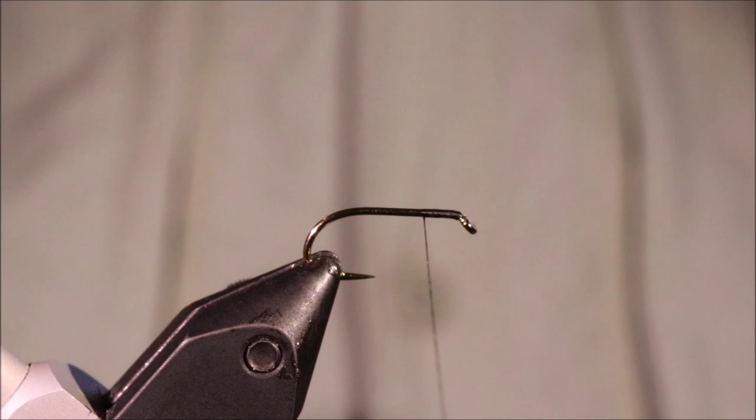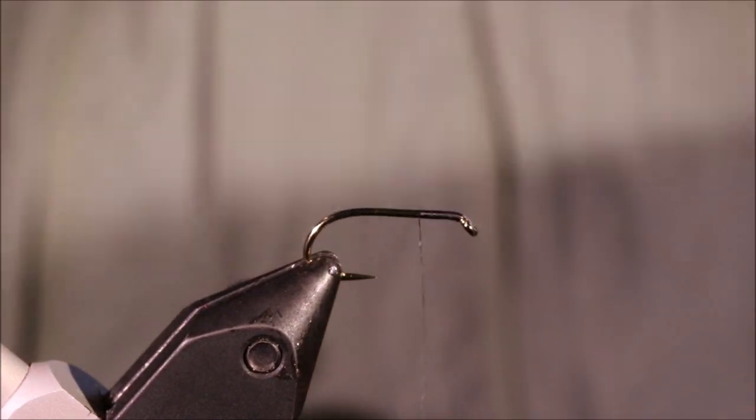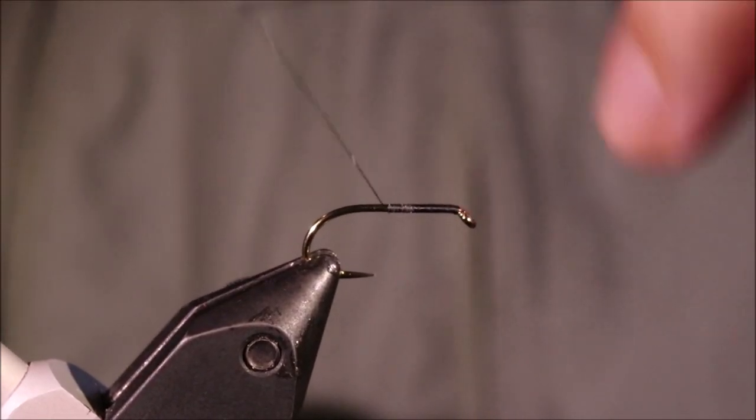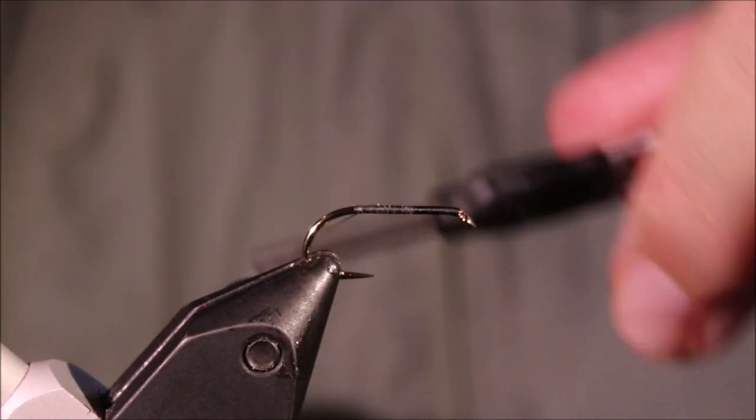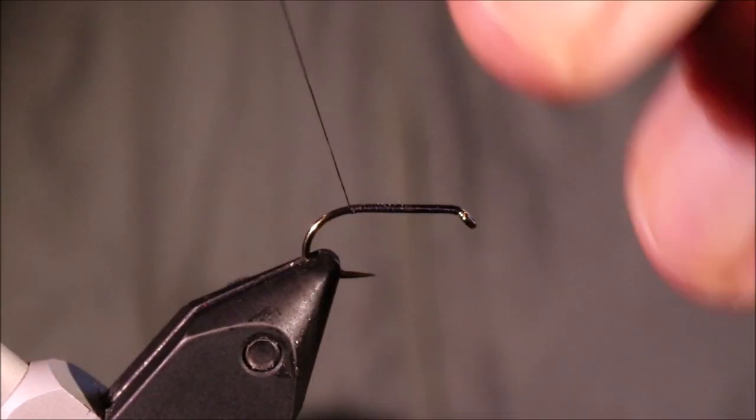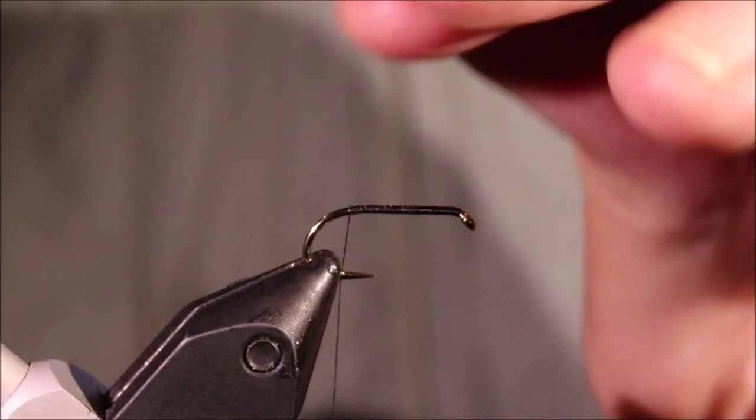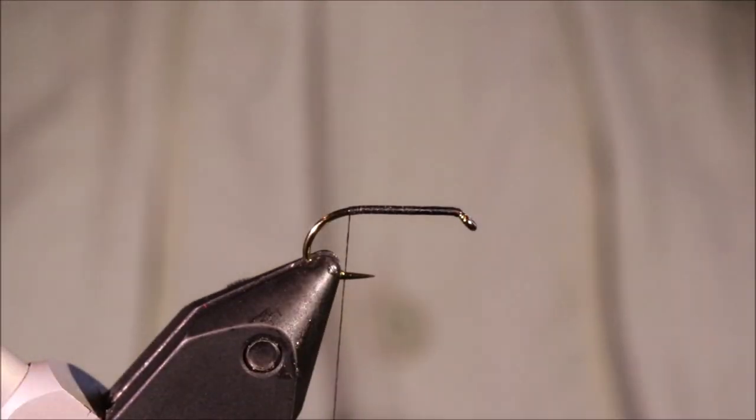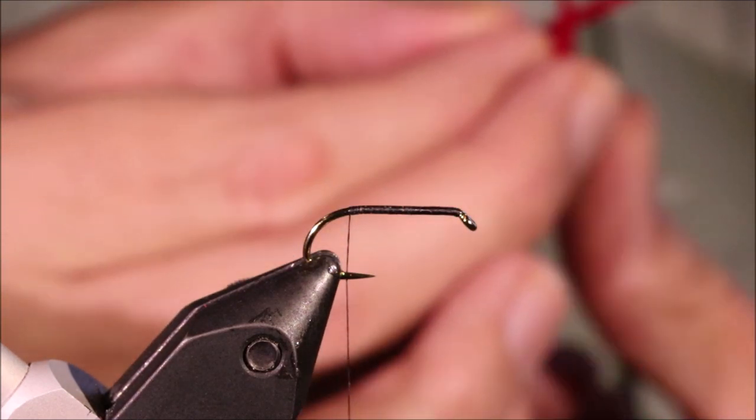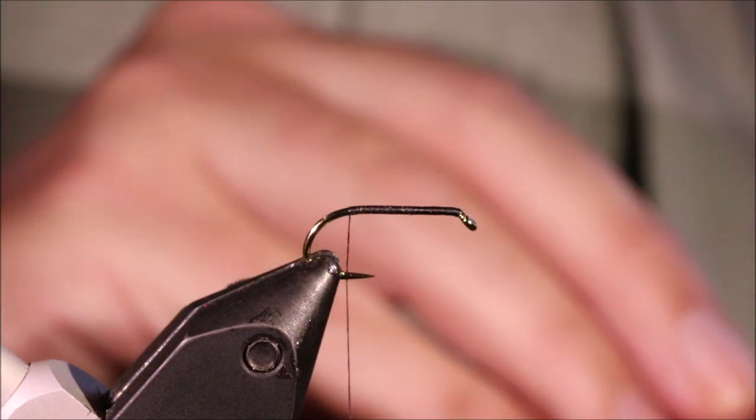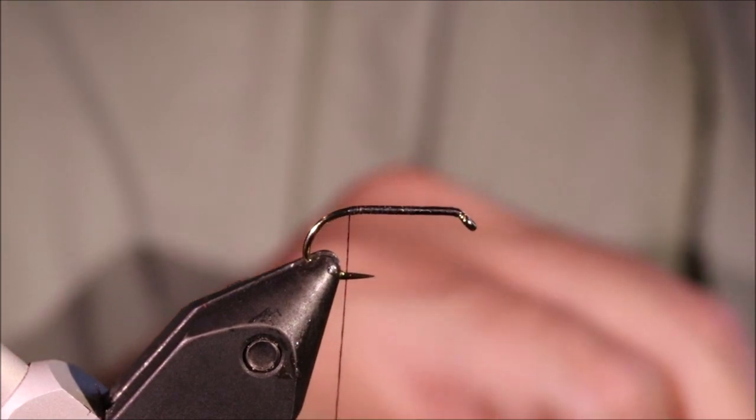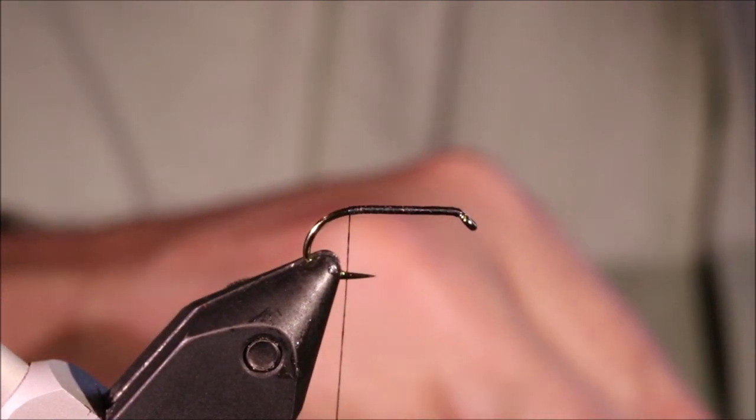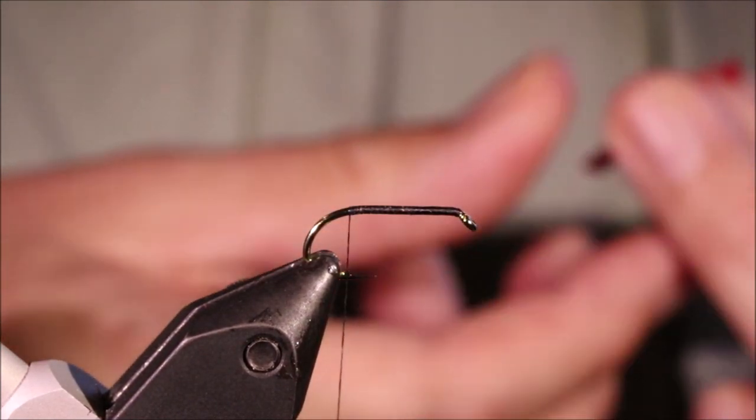So I've got my hook in my vise, this is a Kamasan B175 size 10, but you can tie these down to a 14 easily and much bigger. You can tie them big like a salmon in a salmon iron, or as a streamer or a lure as you would say in Britain for trout. You can tie them up to a size 6 or a 4 even, and they work well.